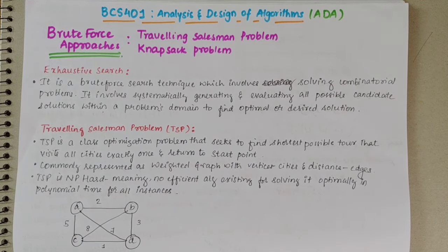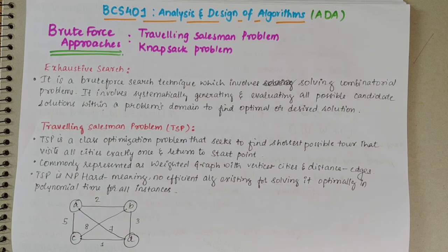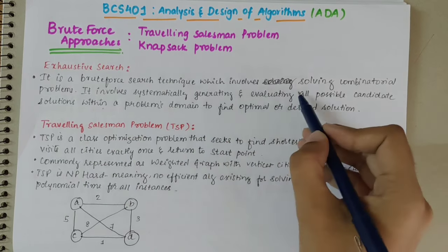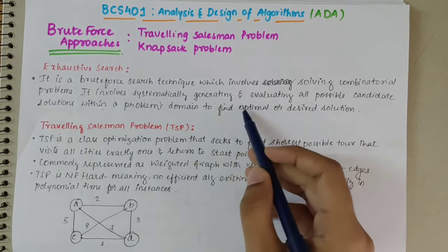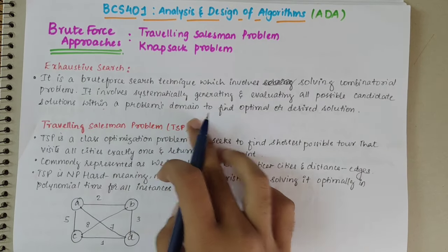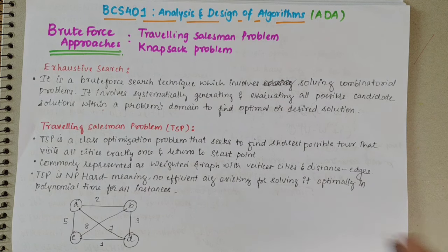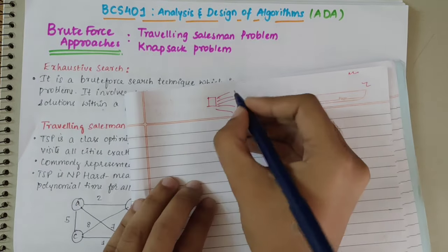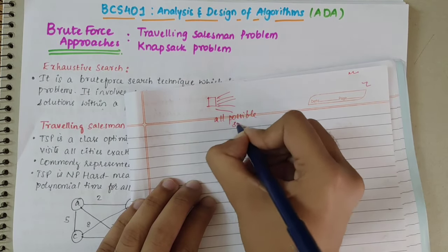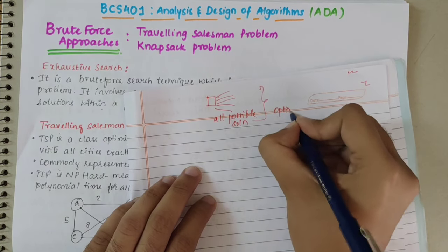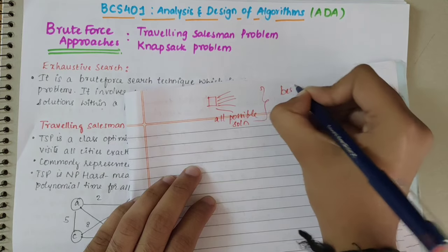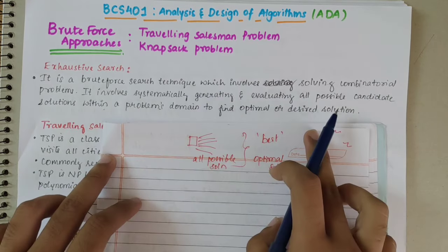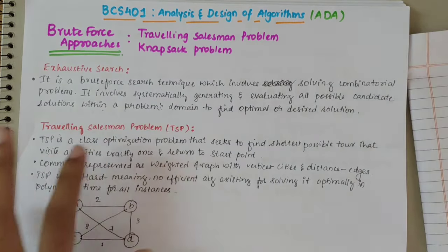In this video we will be looking into brute force approaches, discussing the travelling salesman problem and the knapsack problem. Exhaustive search is a brute force technique which involves solving combinational problems by systematically generating and evaluating all possible candidate solutions within a problem's domain to find the optimal or desired one. From all possible solutions, you select the one which is optimal — meaning the best solution that obeys the given constraints and satisfies all the conditions of the problem domain.